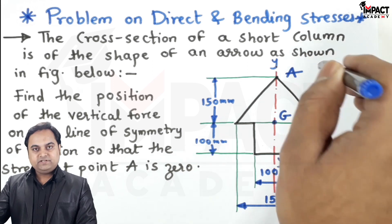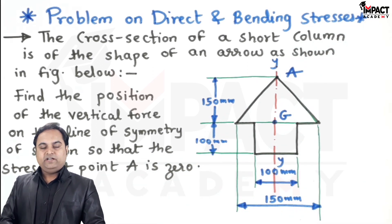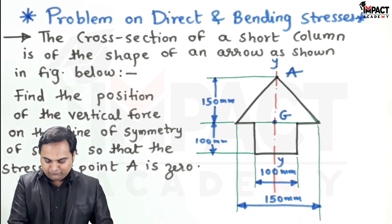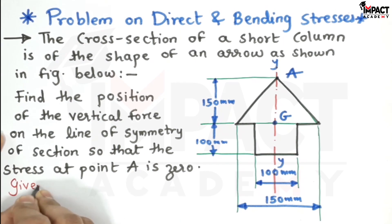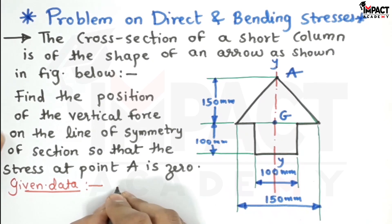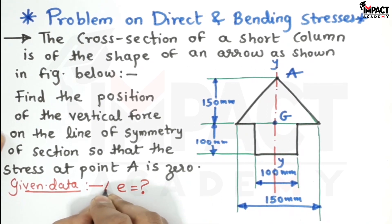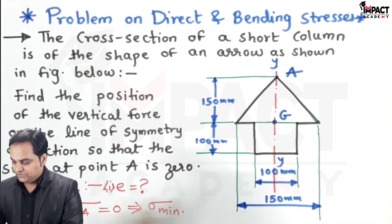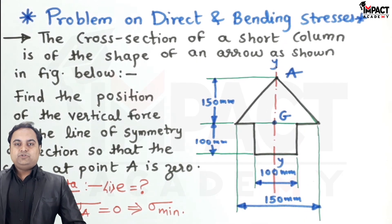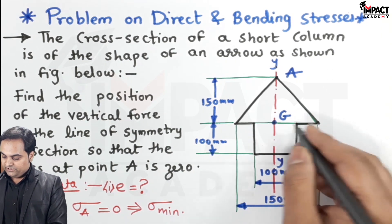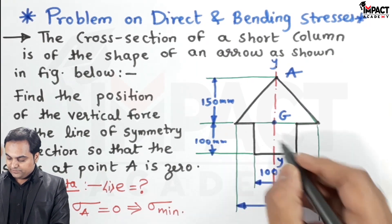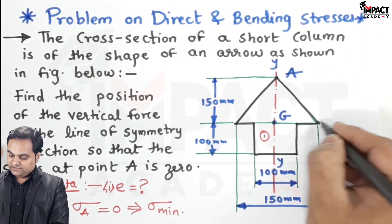The question is to find the distance of the load, which is called the eccentricity. The stress at point A is zero, which is the minimum stress condition. To solve this, I'll divide the arrow section into two areas: area one is a square of 100 by 100, and area two is a triangle.